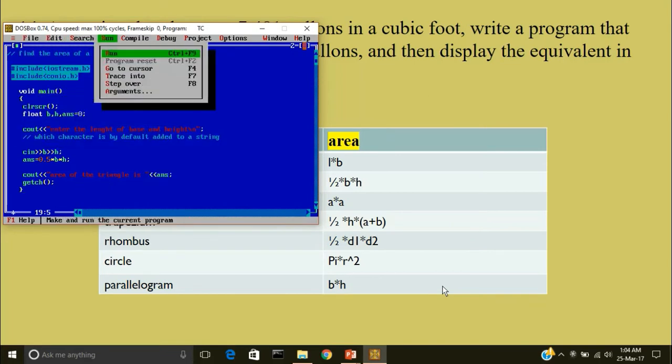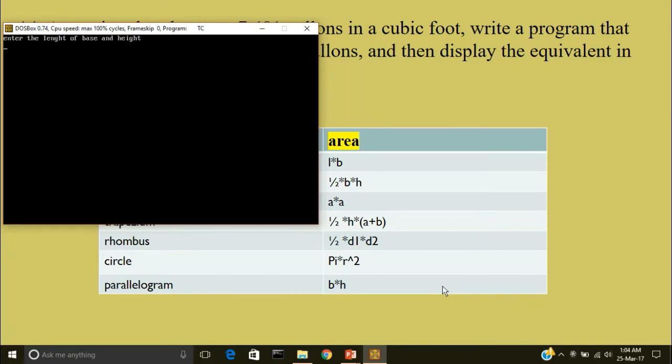Now compile it. Run the program. Enter the length 34, 23. So the area of triangle is 391.